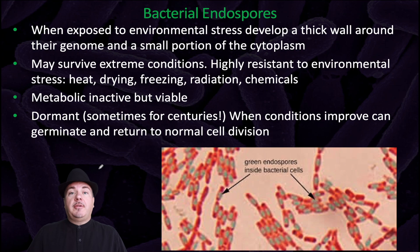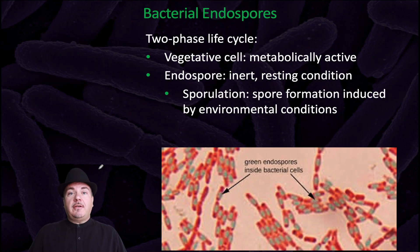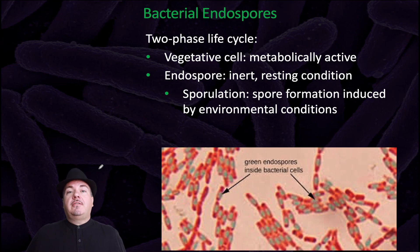The endospore can be dormant, sometimes for centuries, and then when conditions improve, it can germinate and return to normal cell division. So bacteria can undergo a two-phase life cycle: the vegetative cell, which is a metabolically active cell, and the endospore, which is inert and in a resting condition.